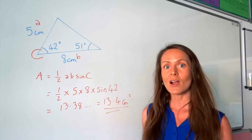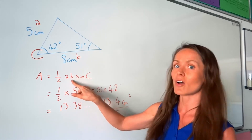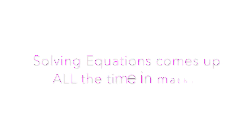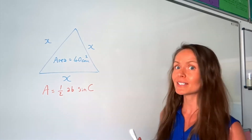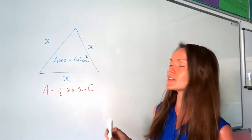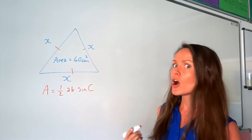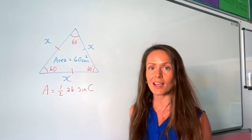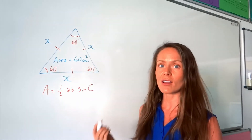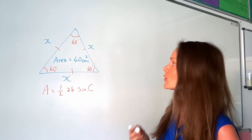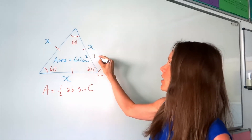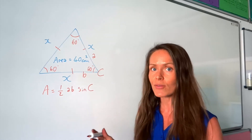Now I'm going to do some harder problems where we might be given the area and have to work out one of the sides or one of the angles. In this next example, we've been given the area and have to calculate the value of x. All sides are equal, so this is an equilateral triangle. Equilateral triangles all have angles of 60 degrees — the angles add up to 180 and 180 divided by 3 gives 60. I'll choose one of those angles as angle C, and the sides either side of angle C are a and b.